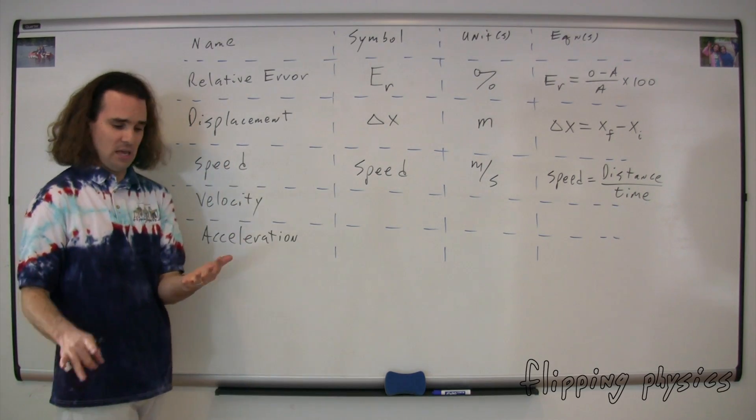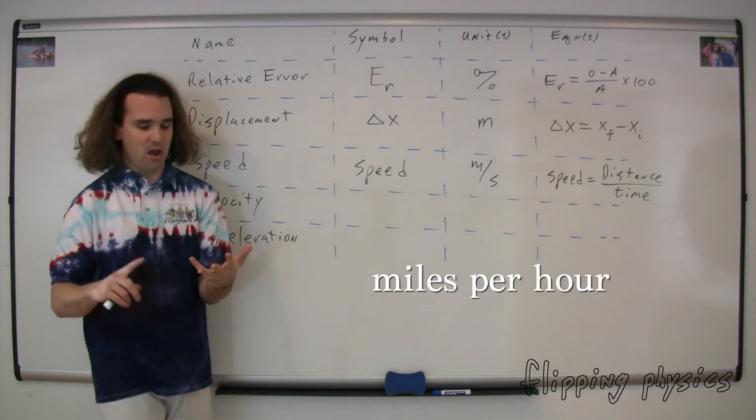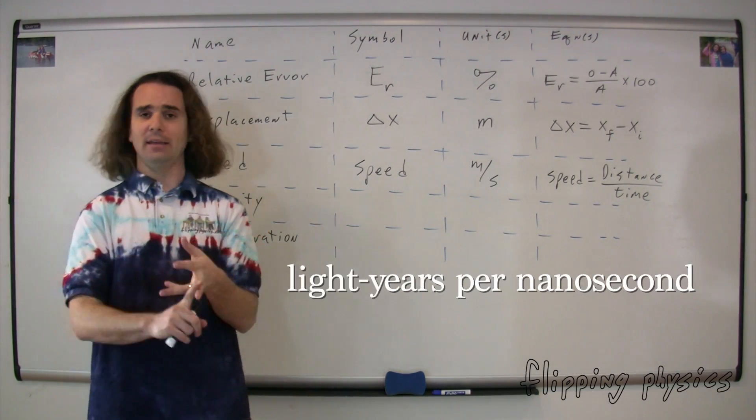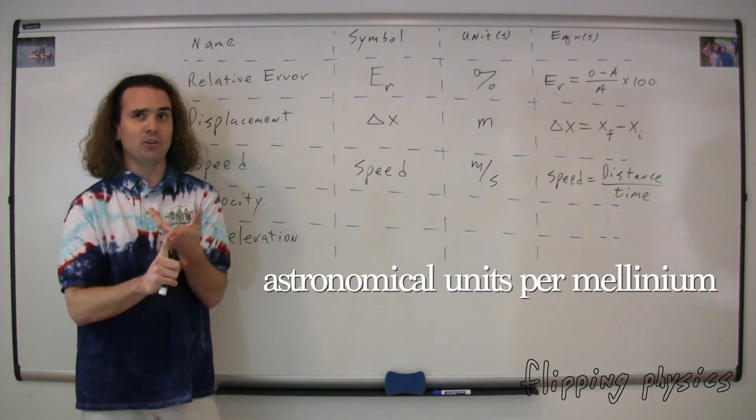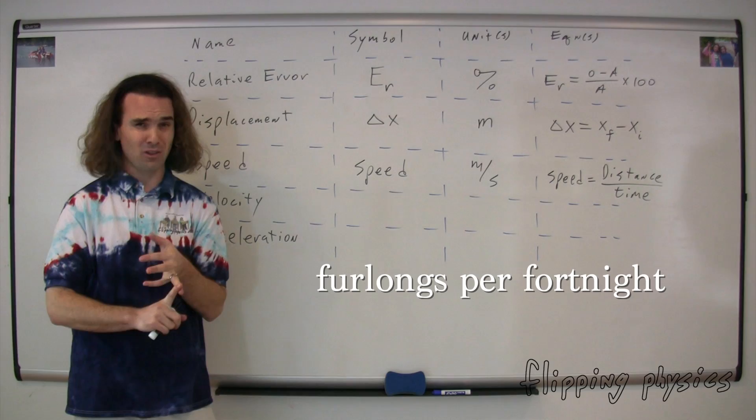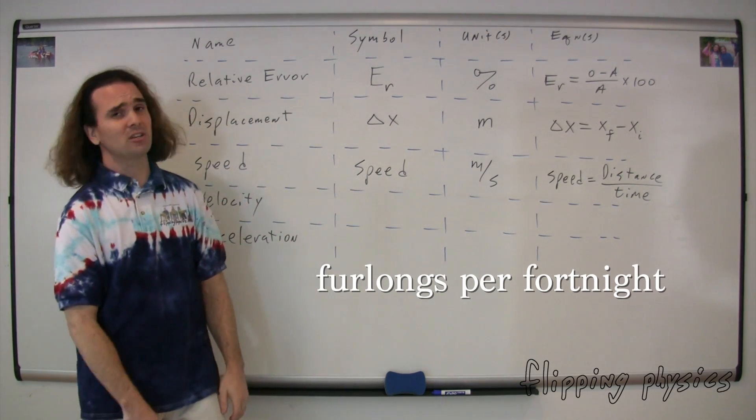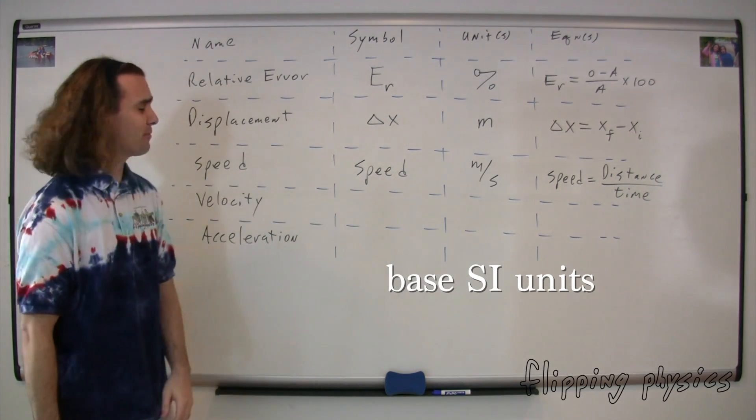And thank you for pointing out that we use base SI dimensions in our table of friends. We could, of course, give speed in miles per hour, feet per second, light years per nanosecond, astronomical units per millennium, parsecs per century, or even furlongs per fortnight, but we're just going to use base SI dimensions in our table of friends.